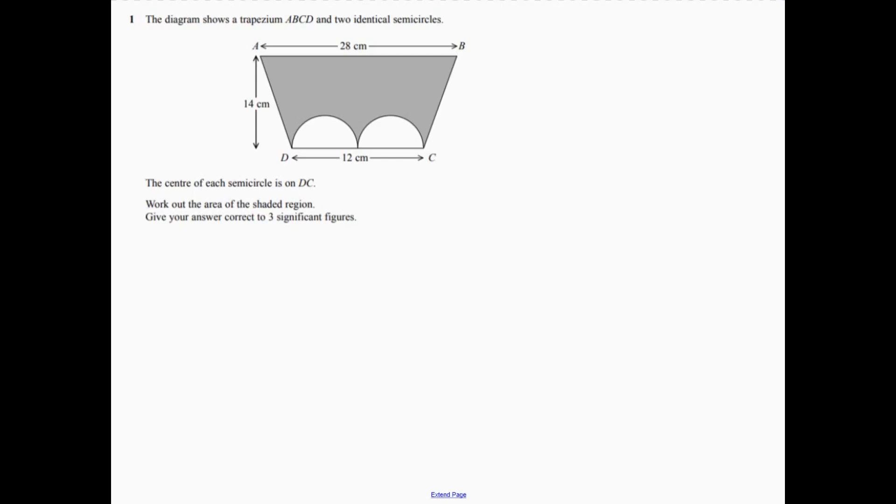Question one. So the area of the shaded part is the area of a trapezium and then we're going to take away. Now we've got two halves of a circle so then we need to take away the circle because the two halves make up a whole.